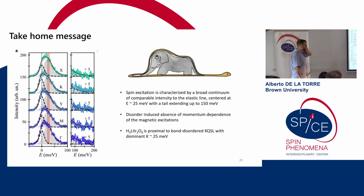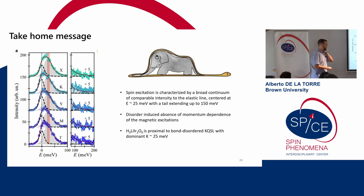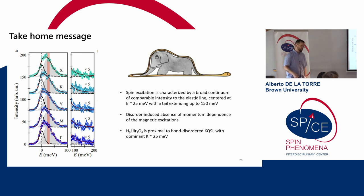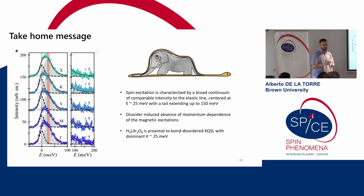Our conclusion is that yes, there is something important in this blob. You have a broad continuum centered around 25 meV with a tail extending to around 150 meV, consistent with calculations of S(Q,ω) in a Kitaev model. But there is disorder, so we don't see any momentum dependence. We think that to understand this compound, you need to consider Kitaev quantum spin liquid models including bond disorder. The dominant interaction is Kitaev exchange of around 25 meV. We are not sensitive to any fractionalized excitations, though there is thermodynamic evidence at low temperatures for spin excitations not consistent with standard Kitaev models. But for the magnetic Hamiltonian, the dominant interaction is Kitaev exchange.